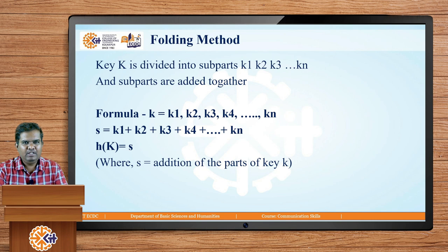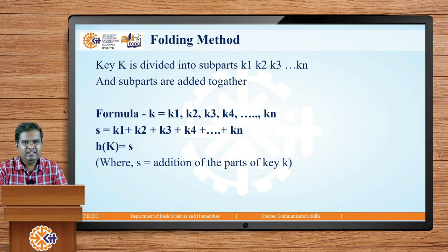The next method is the folding method, where the key k is divided into sub-parts k1, k2, k3, up to kn — these may be individual digits or groups of digits. These sub-parts are added together: s = k1 + k2 + k3 + ... + kn. For example, if the key is 1234, then 1 + 2 + 3 + 4 gives 3, then 6, then 10 — so 10 is the index at which key 1234 will be stored.